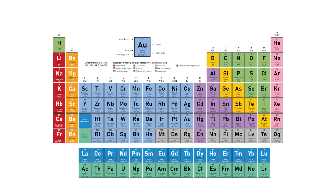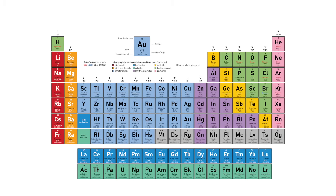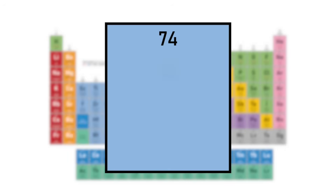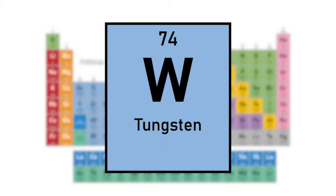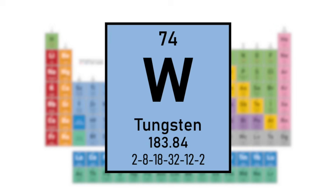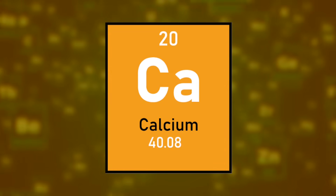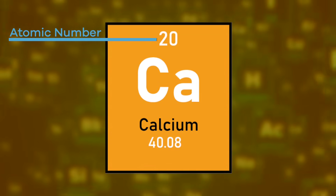As you do research, you will find that some versions of the periodic table of elements show more information than others. Some tables may only include the atomic number and element symbol, while others include the element name, atomic weight, and more. But let's get back to calcium for a minute — calcium's atomic number is 20.